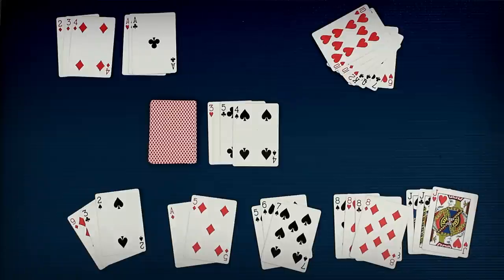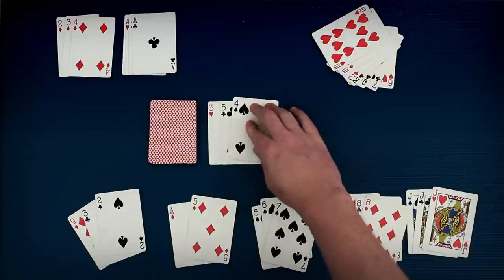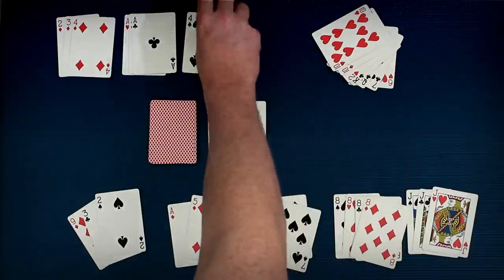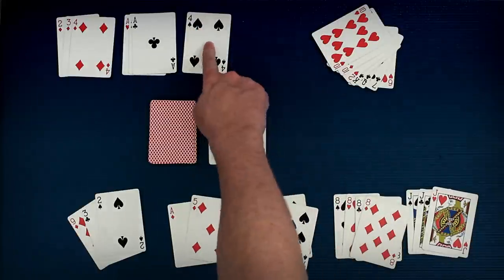But there's one more thing. If someone discards a card that could have been melded or laid off, the first person that says Rummy gets to take it and immediately use it. They have to call Rummy before the next player draws or it's too late.